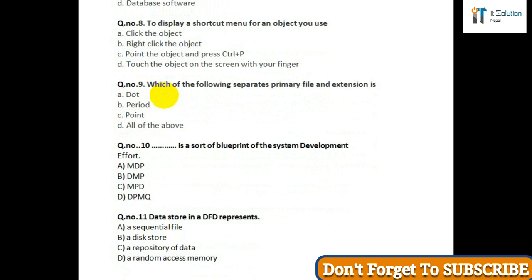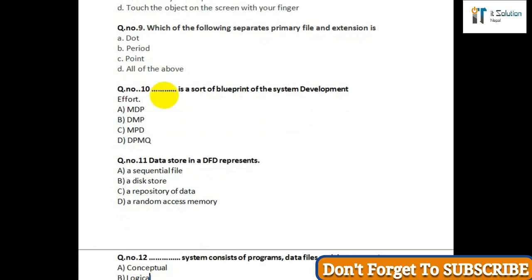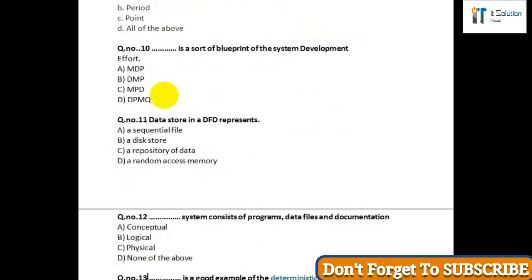Question number eleven: Data store in DFD represents — option A: sequential file; option B: disk store; option C: repository of data; option D: random access memory. Question number twelve: Data system consists of programs, data files, and documentation — option A: conceptual; option B: logical; option C: physical; option D: none of the above.